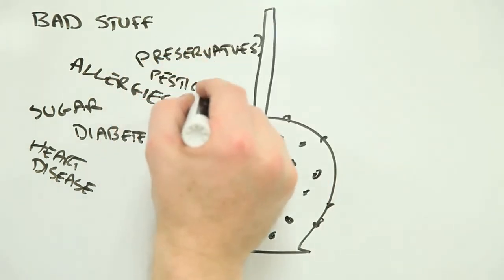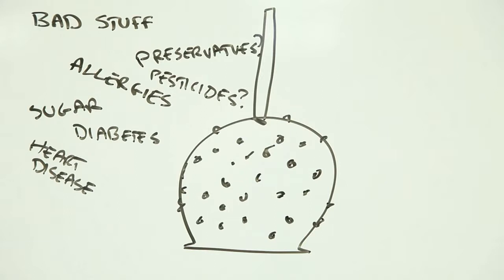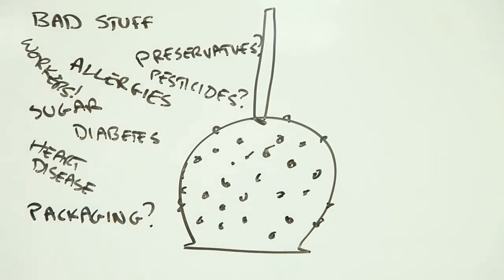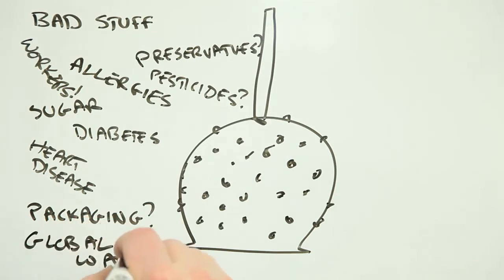Are the preservatives and other additives in the coating safe? Does the apple contain traces of pesticides? And were the farmers and neighbours exposed to these pesticides as the apple was being grown? Then there's the packaging the apple came in — does it contain harmful chemicals, and did some of these get into the apple? Was anyone exposed to dangerous stuff while the packaging was being made? And did the production of this caramel apple contribute to global warming and, as a result, increase the level of health risks around the world?